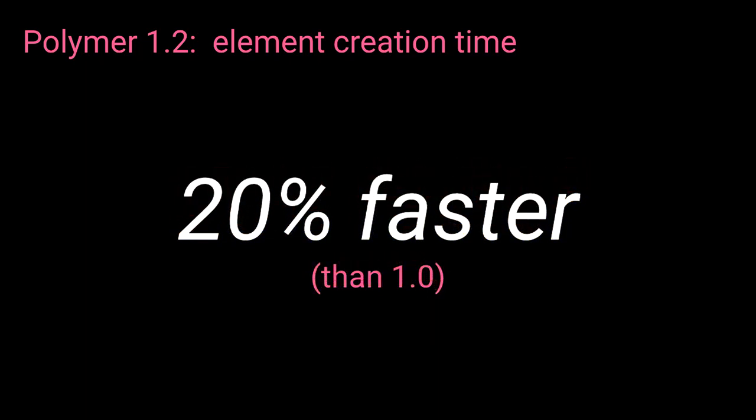We have a mantra on the team: every feature has a cost. Whenever you add a feature, you're adding some level of abstraction away from the platform — there will always be a cost. So whenever we're thinking about implementing a new feature, we ask what cost we're transferring onto our developers. I'm really proud to say that even with all those features added since 1.0, version 1.2 — the most recent release — is actually 20% faster than 1.0, and this is a conservative estimate.